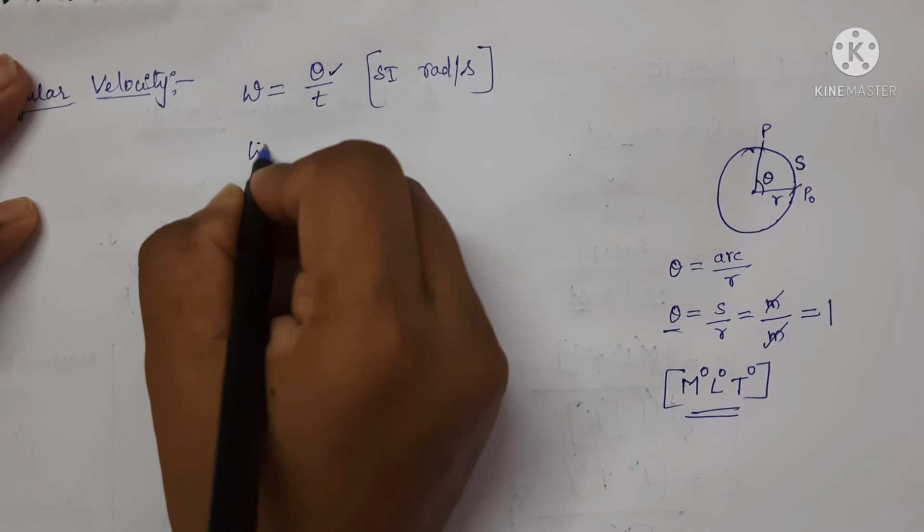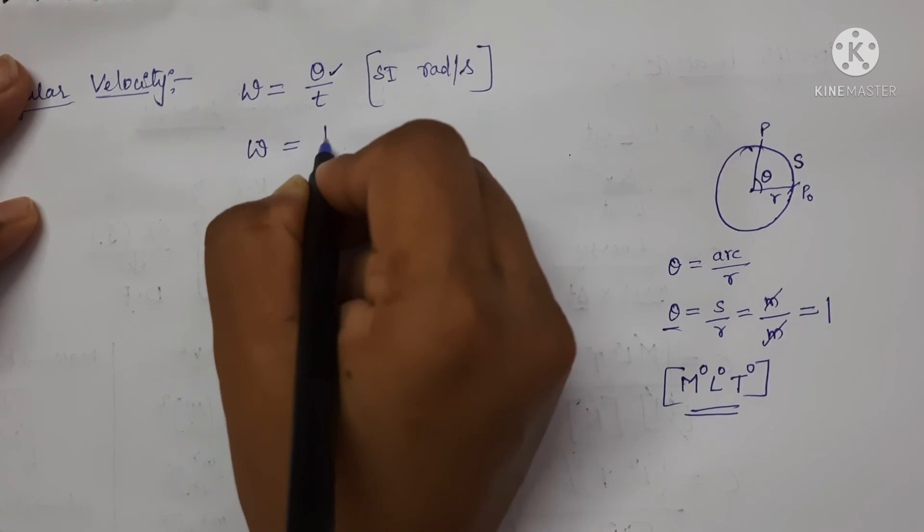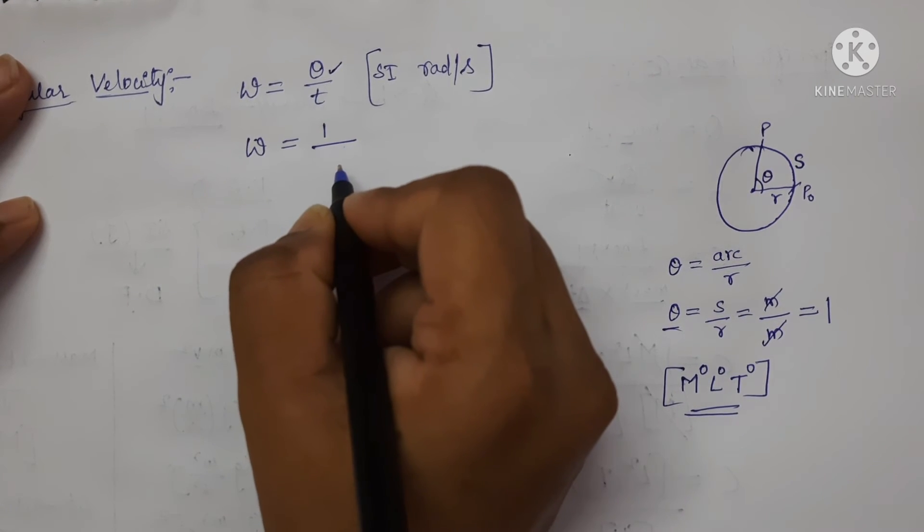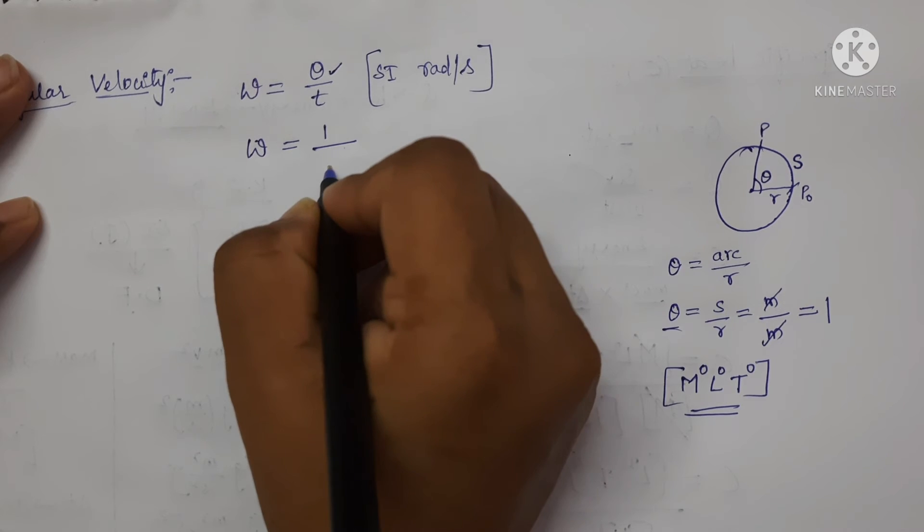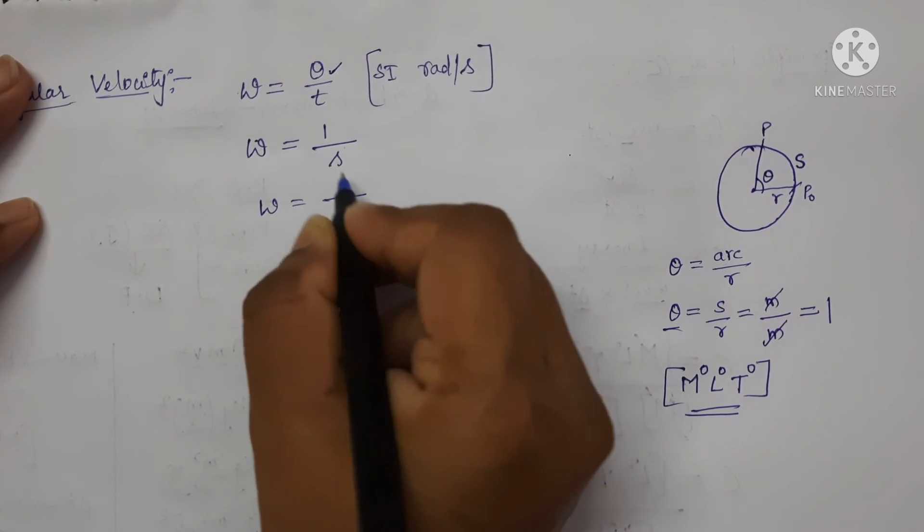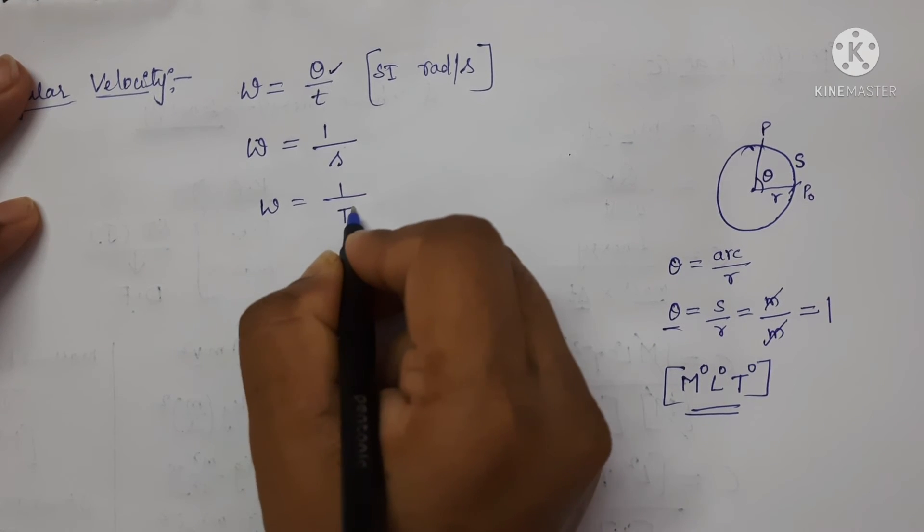So here in the place of angular displacement, I am writing as 1 upon T, where T is nothing but time. SI unit of time is second. Omega is equal to 1 upon second, which is expressed in terms of dimensions capital T.